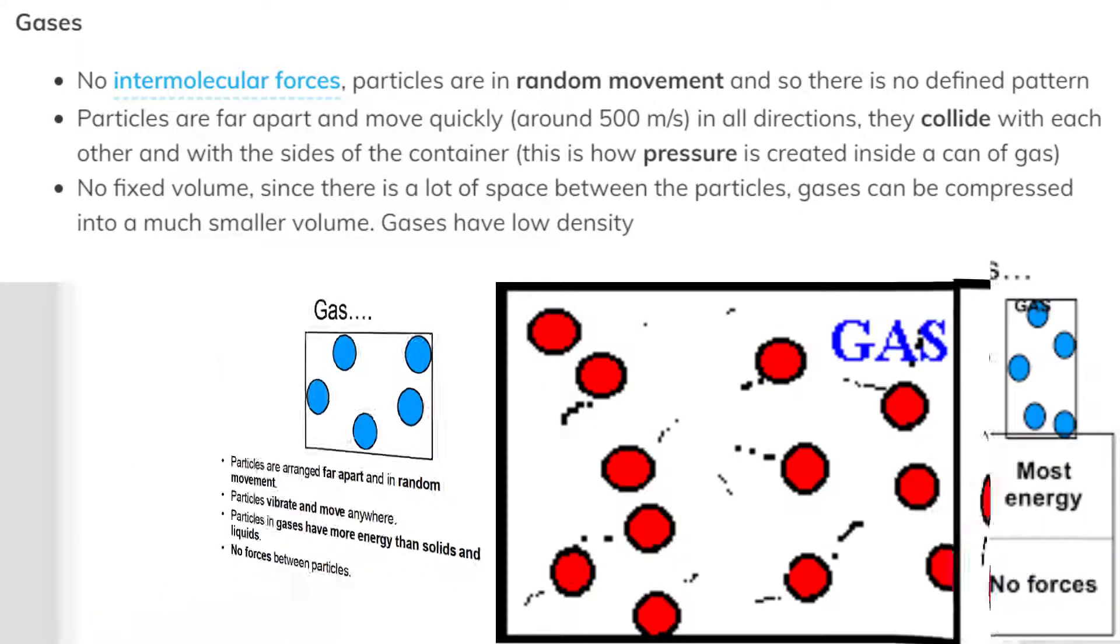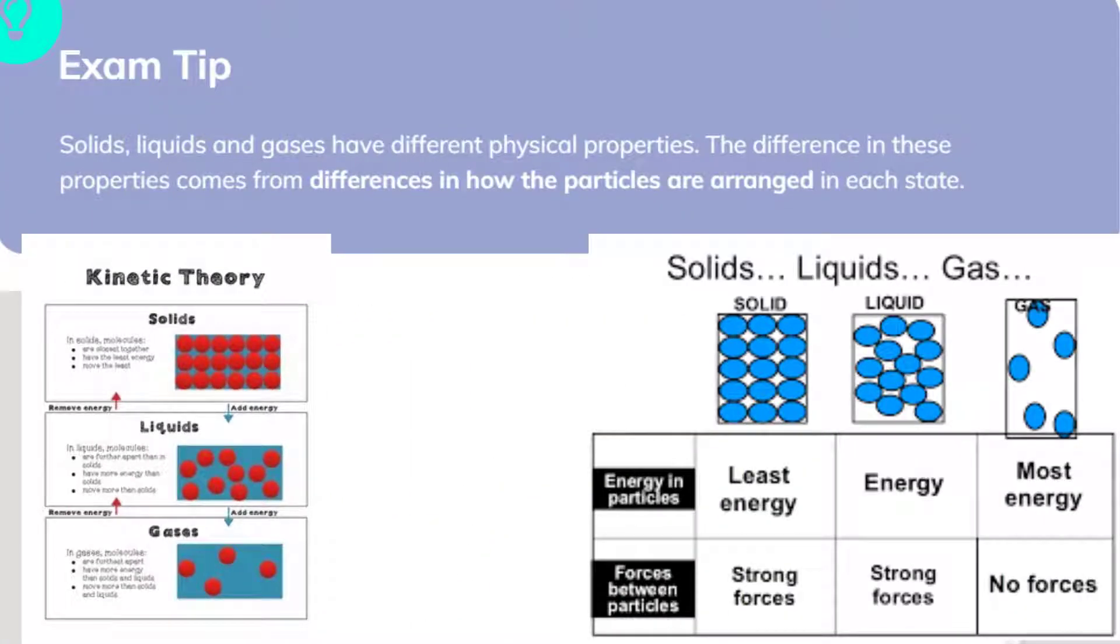Exam tip: solids, liquids and gases have different physical properties. The difference in these properties comes from differences in how the particles are arranged in each state.